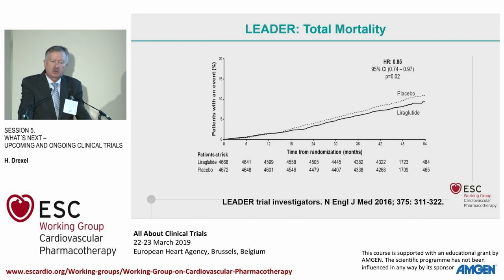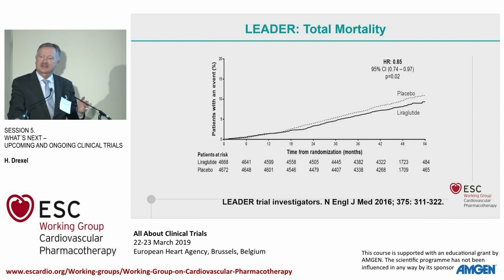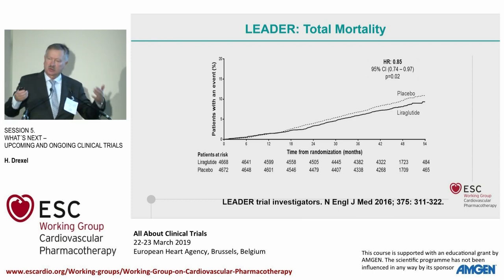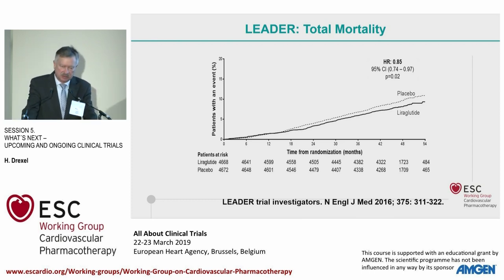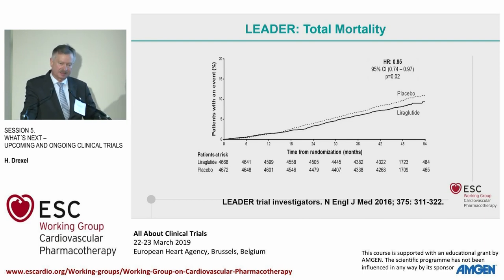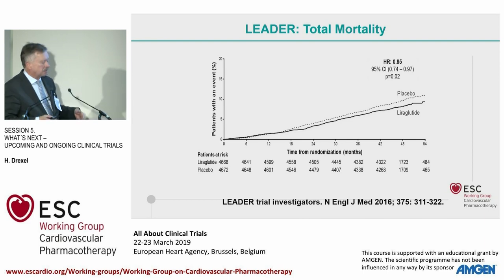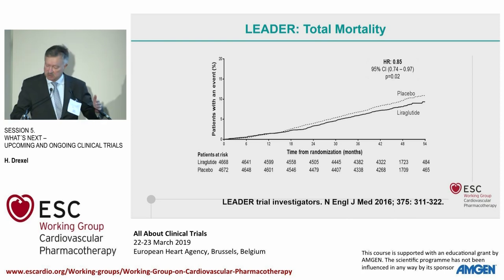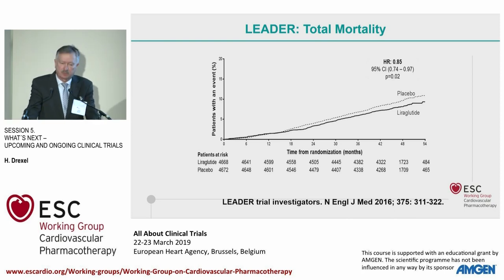If you go further to total mortality — repeating what endpoints we should look at, as Professor Rosano just showed — total mortality is always a composite endpoint between different types of death and is always diluted. But here the dilution is not enough to lose significance between the Liraglutide and placebo group. So this is a very good trial, clearly positive.